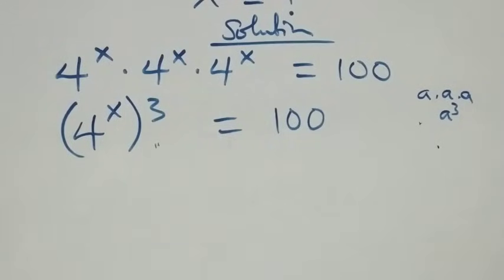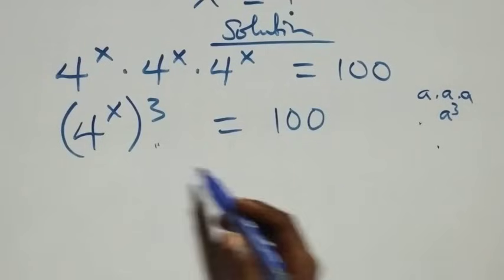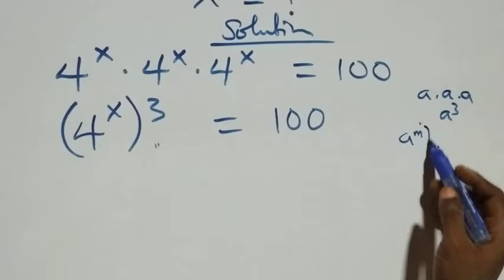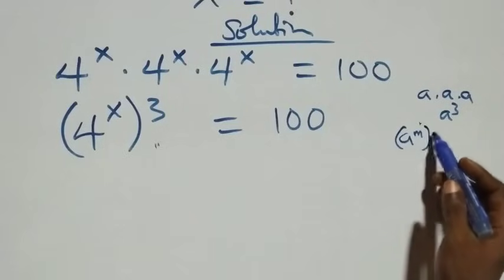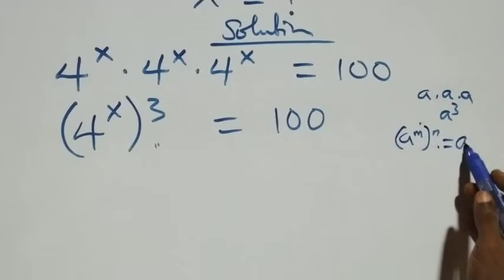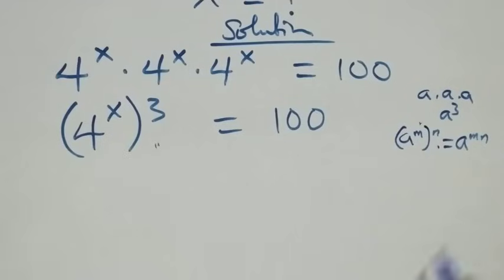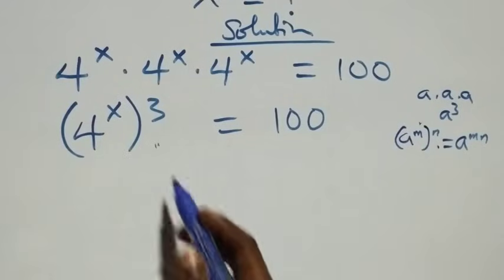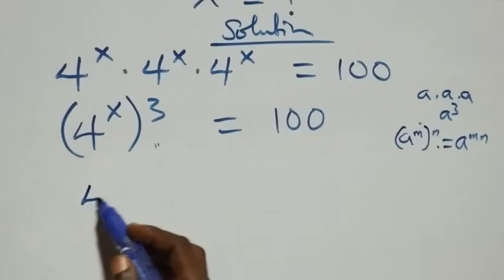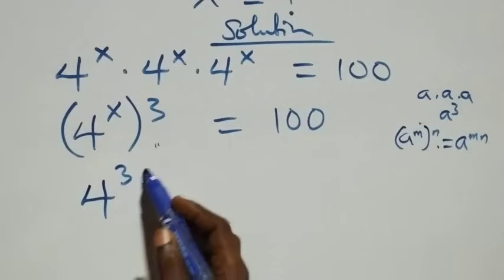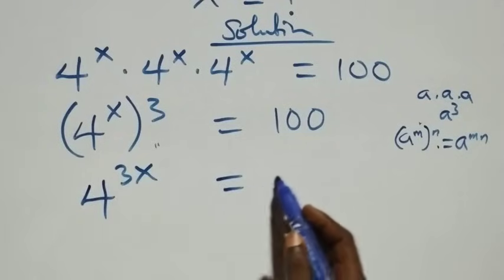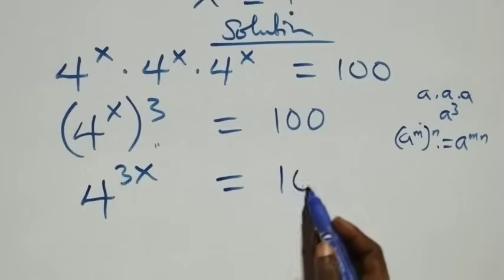The next step follows from the rule that when we have a raised to power m, then raised to power n, this is the same thing as a raised to power m times n. So the powers multiply, and we have 4 raised to power 3x equals to 100.